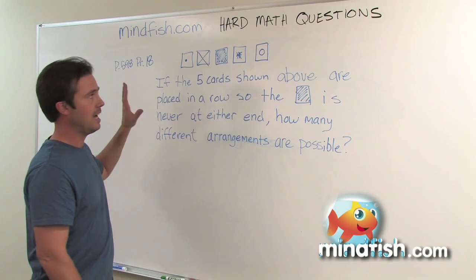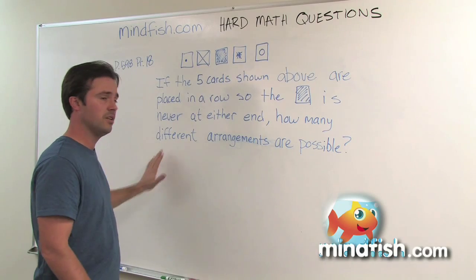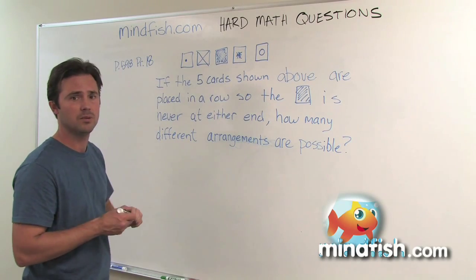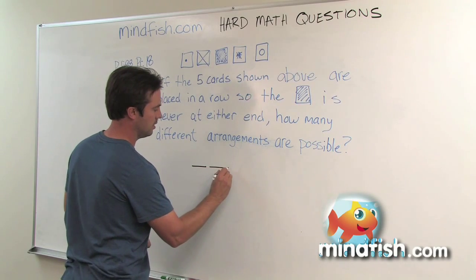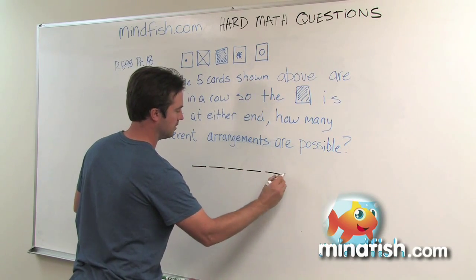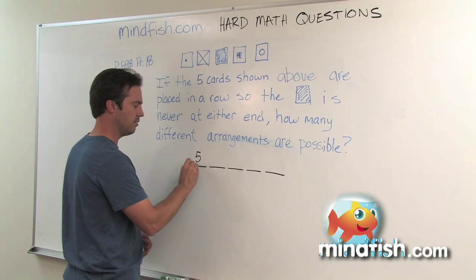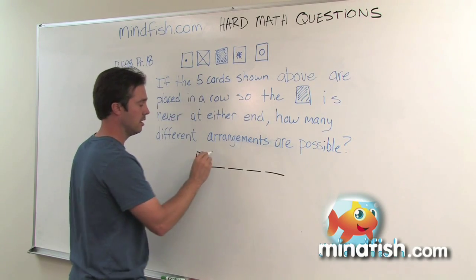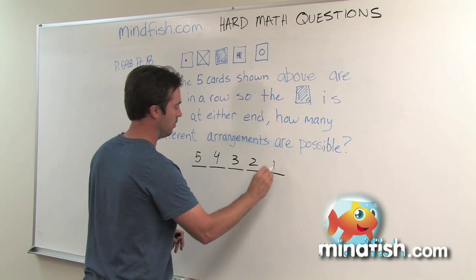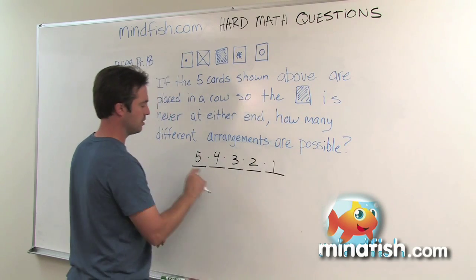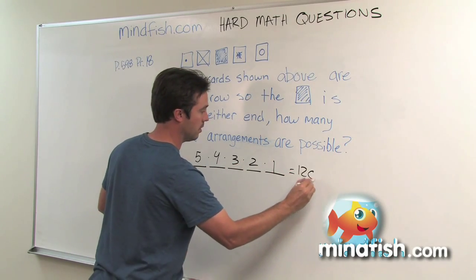Let's say for example they asked us: there are five shapes and we have to arrange all five shapes in five spots — how many ways can we do that? Essentially you lay out the five spots and ask how many choices do I have at each spot. Choice one is five, choice two is four, choice three is three, two, and one. You multiply five times four times three times two times one and you get 120.